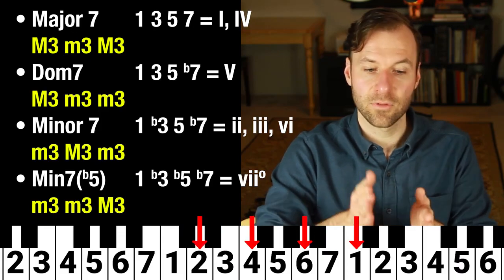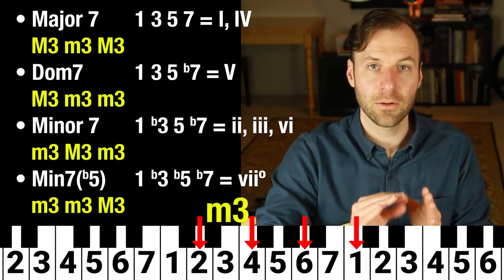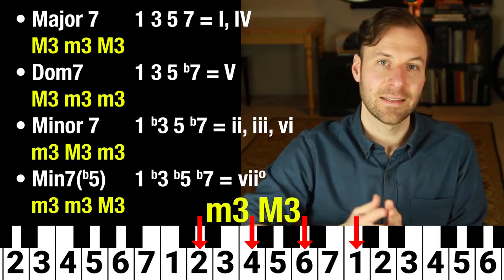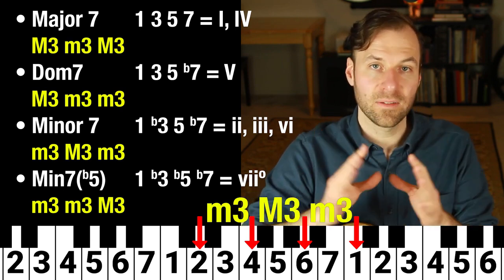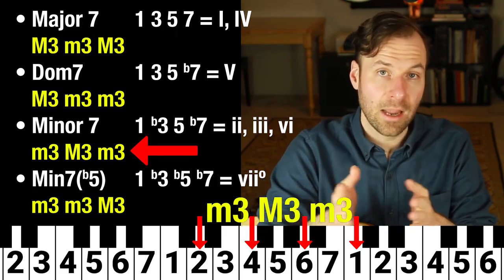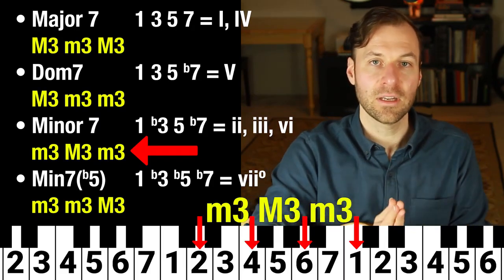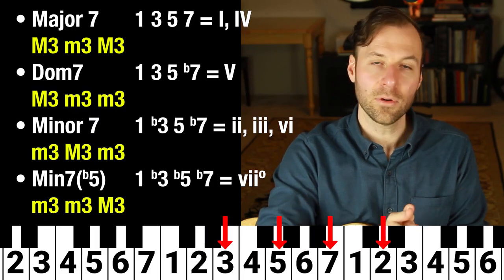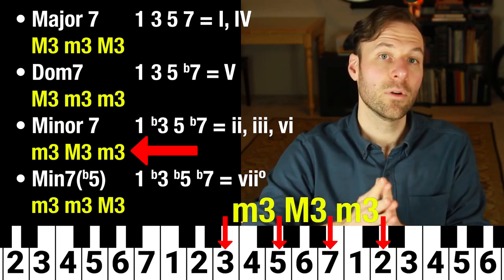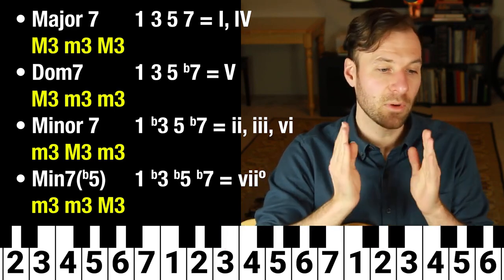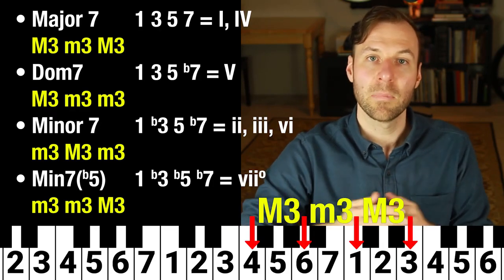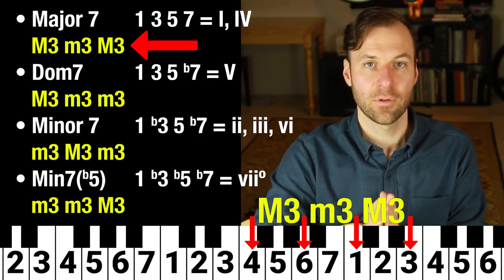For the two chord, two to four has a half step — minor third. Four to six has no half step — major third. Six to one has a half step — minor third. So minor third, major third, minor third: that's our minor seven chord, which is why the two chord in a major key is always minor seven. Building off the third gives that same structure, so the three chord is also minor seven. For the four chord: four to six is a major third, six to one is a minor third, one to three is a major third — major third, minor third, major third — that's why it is a major seven chord.